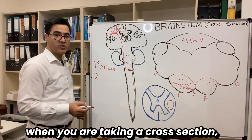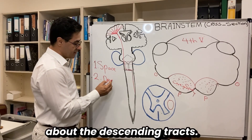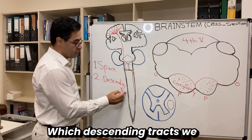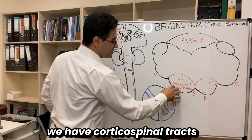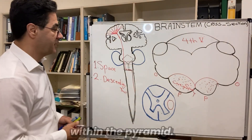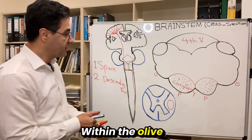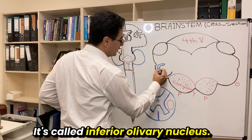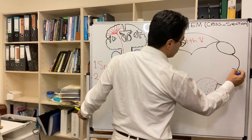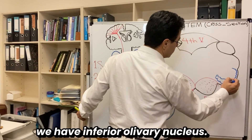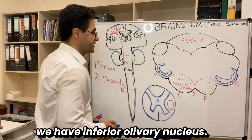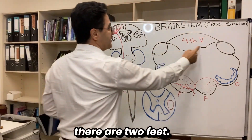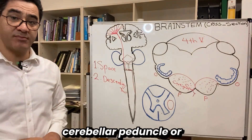The second question when taking a cross-section is: which descending tracts do we have at this level? We have corticospinal tracts within the pyramid. What about the olive? Within the olive we have a nucleus called the inferior olivary nucleus. On either side of the fourth ventricle at the back there are two feet called peduncles — the inferior cerebellar peduncle.